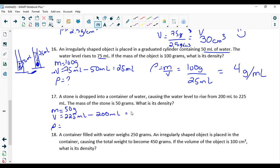That will give me 25 mL. And lastly, I don't know my density. That's what I'm looking for. So again, 50 divided by 25 mL. 2 grams per mL.